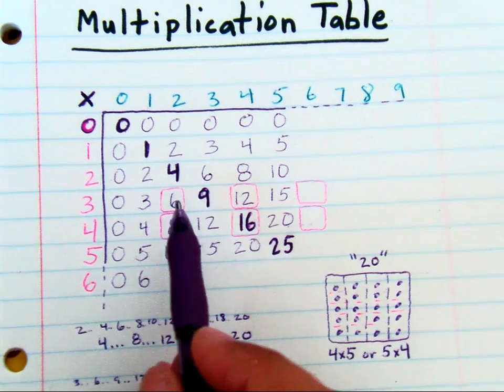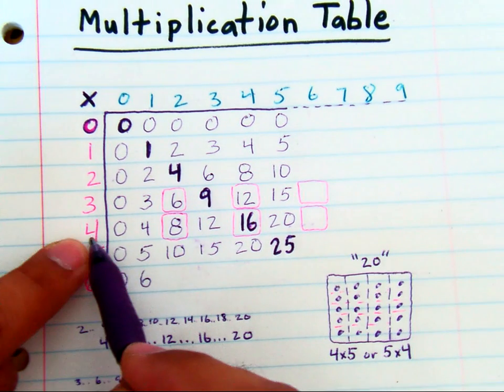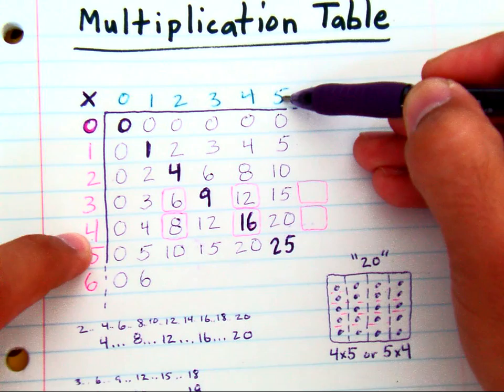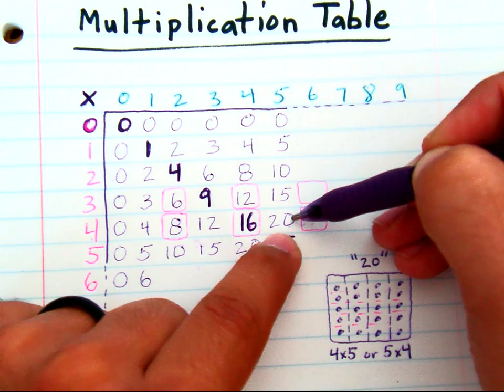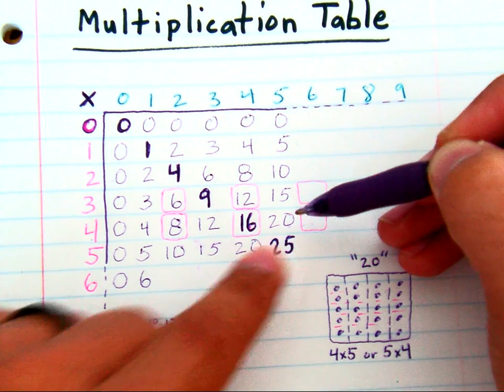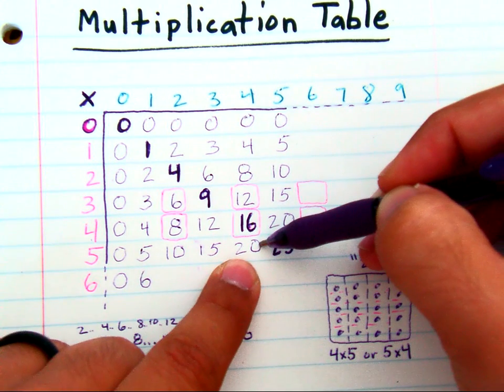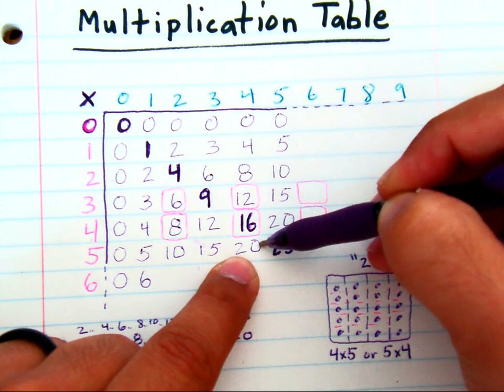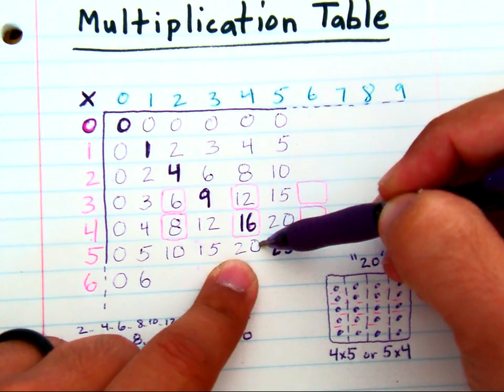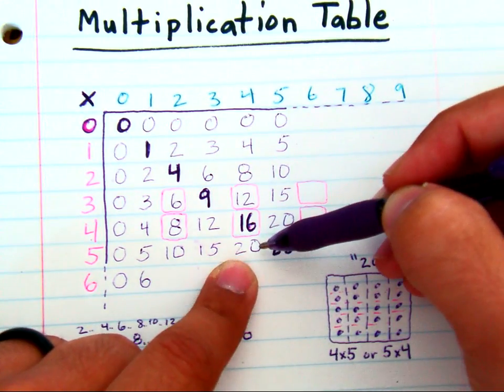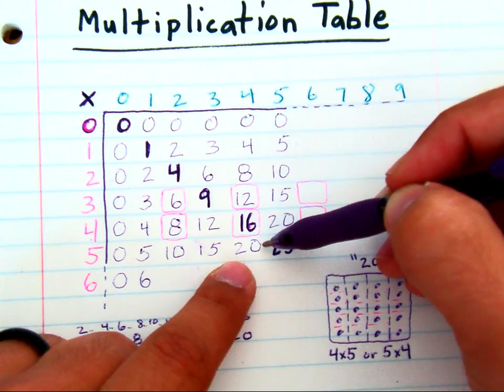Now on the multiplication table, you're gonna see that there's a four and a five which meets at this twenty, but there's also this five and this four which also meets at twenty. So this table shows you how many different ways you can multiply two factors to get a product.